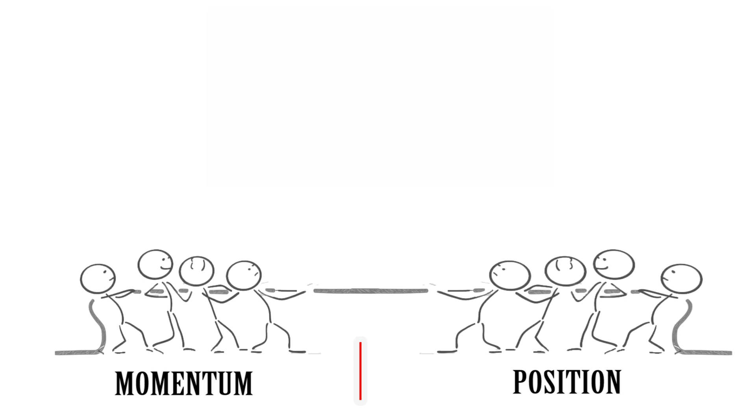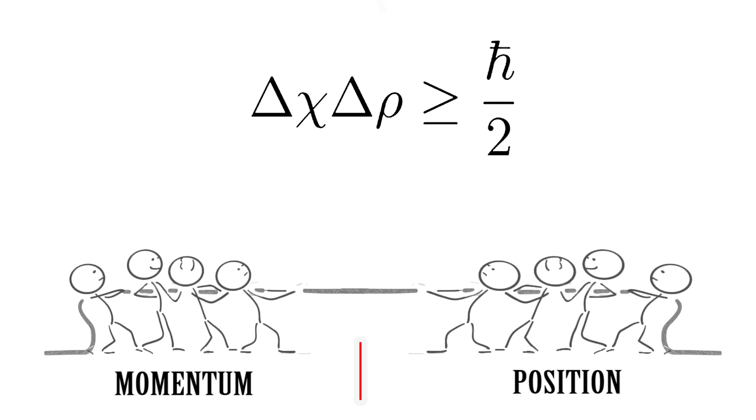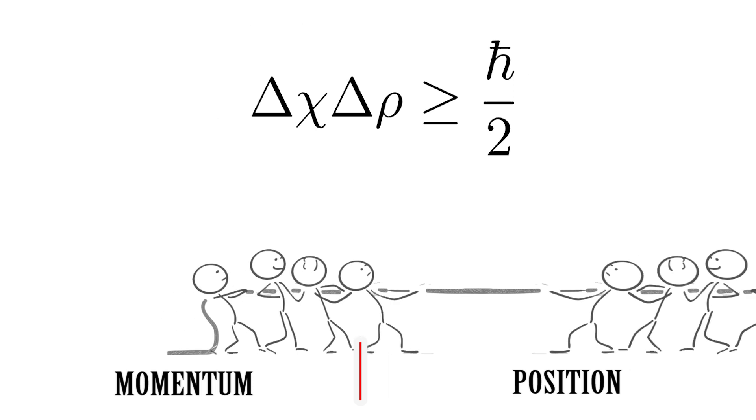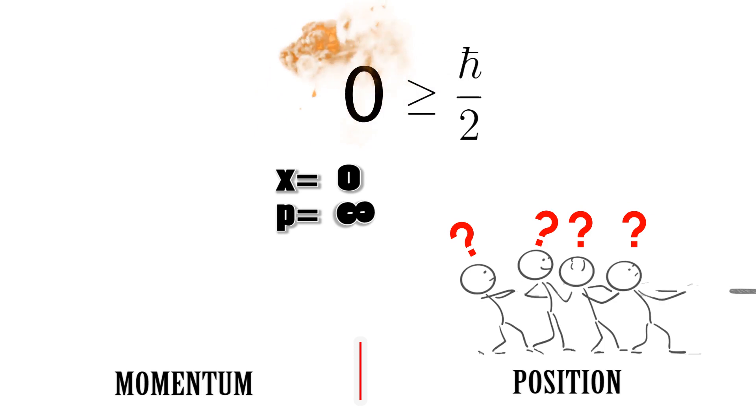Now when the jiggling stops, there is no motion, which reduces momentum to zero, which would mean one team has the entire rope and the other none. And this would make it impossible to play the game, thus violating the uncertainty principle and things would no longer make sense.